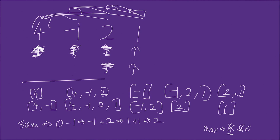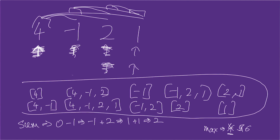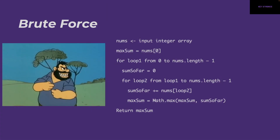In the end we get all possible subarrays from the given array and we keep track of the sum as well as the max sum seen so far. Here's how the code looks for the brute force solution.